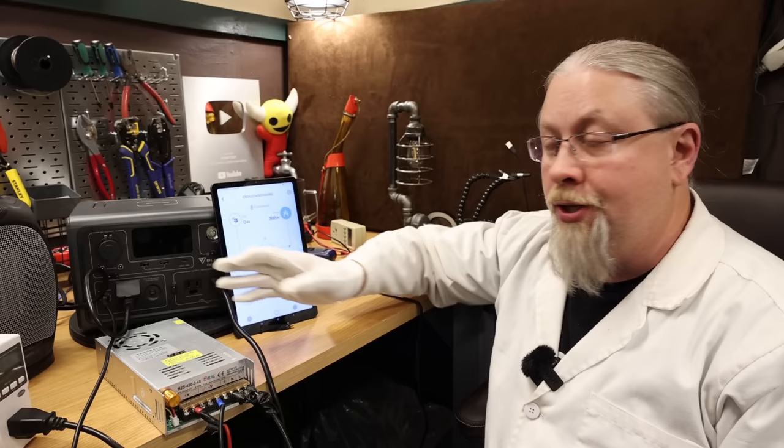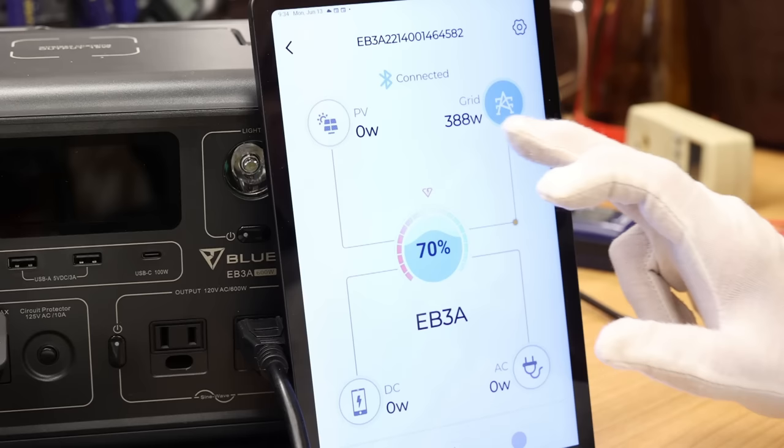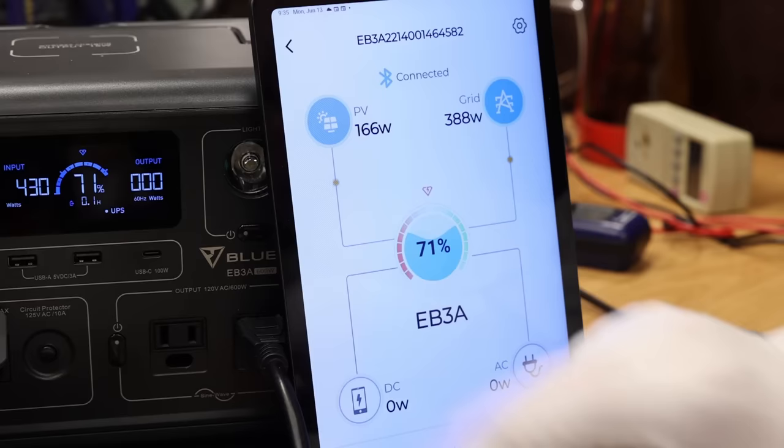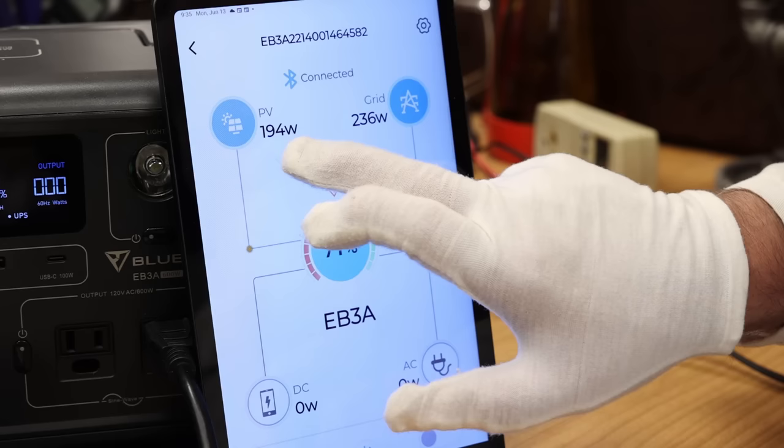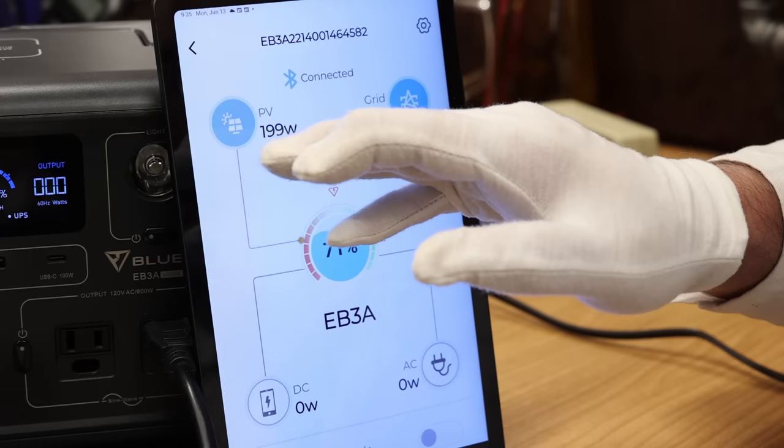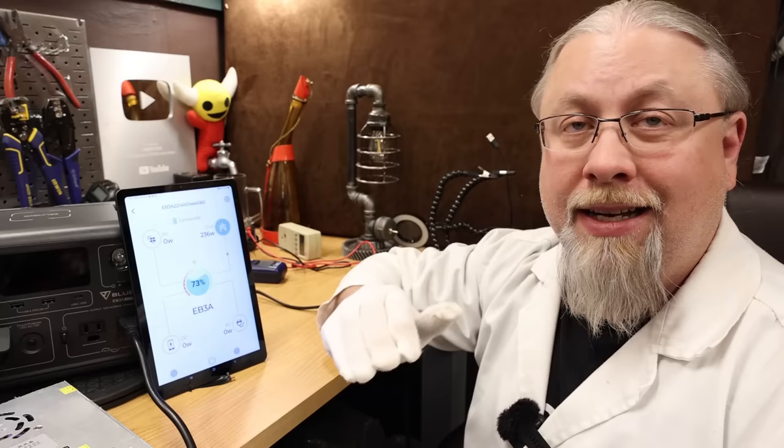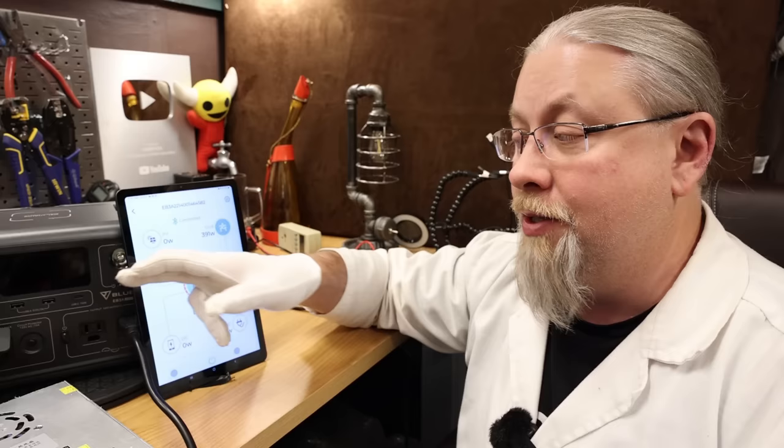This does support dual charging, so you can charge it with solar and AC at the same time. Let's see what the maximum capacity of that is. Here's the grid power, and I'm going to turn on my fake solar. There we are, 430 watts, which is the absolute maximum this will allow you to charge from dual sources. It actually prioritizes solar over grid. It brought the grid side down to allow the solar to max out. This is designed to save you money. That is going to make it smoking fast. That's going to charge this thing in less than one hour, dead to full. There's no product out on the market that I'm aware of that will charge from zero to 100% in less than an hour.